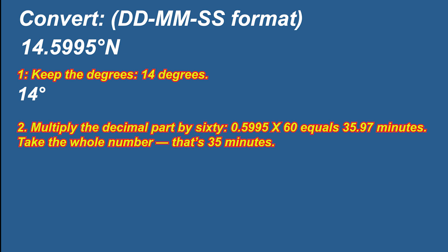Step two: Multiply the decimal part by 60. 0.5995 times 60 equals 35.97 minutes. Take the whole number. That's 35 minutes.